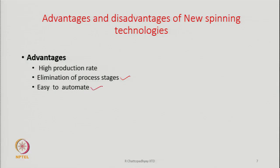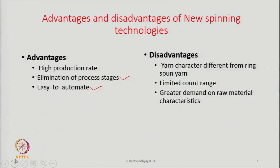And then the other advantage is that these machines are easy to automate. Automation has come in a big way and most of the machines are getting automated, and these machines are easy to automate. Against this, the disadvantages are that yarn character is different from ring-spun yarns — that is the disadvantage.